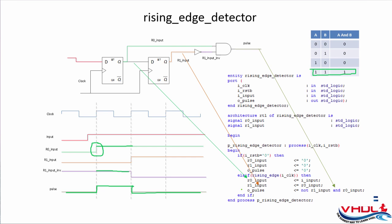The output is assigned as: not R1_input AND R0_input. The output is also strobed with another flip-flop, so the real output is taken from that register.